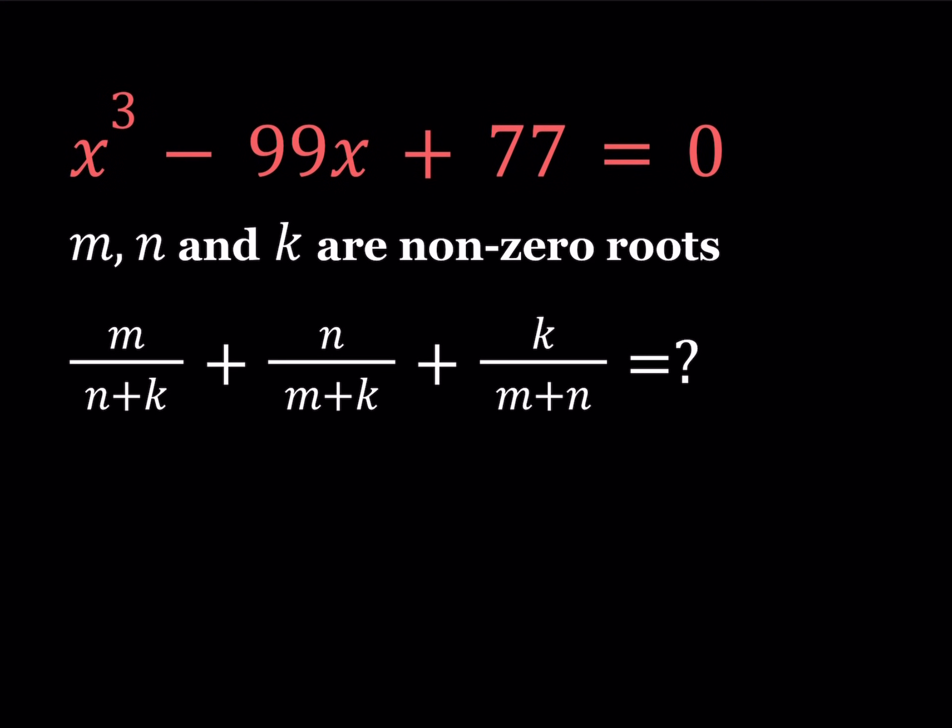We have this cubic equation x cubed minus 99x plus 77 equals 0. M, N, and K are non-zero roots and we're supposed to evaluate an expression like this by using Vieta's formulas. So we have M over N plus K plus N over M plus K plus K over M plus N. So M, N, and K are the roots so we can write some relationships. First of all, the sum of the roots in a cubic equation can be written as negative B over A. In this case, B is 0 so M plus N plus K is going to be 0.